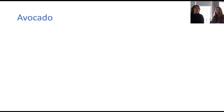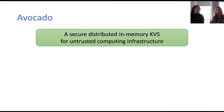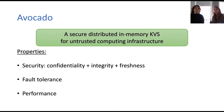So we present Avocado. Avocado is a secure distributed in-memory key-value store for the untrusted computing infrastructure, and we designed Avocado with three important properties in mind: strict security properties — which is confidentiality, integrity, and freshness — fault tolerance or availability, and also performance.